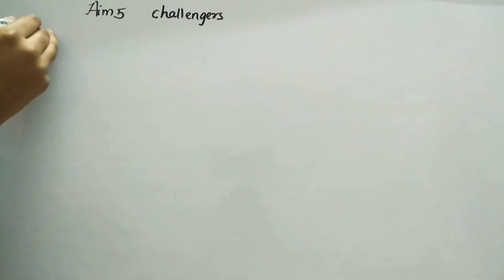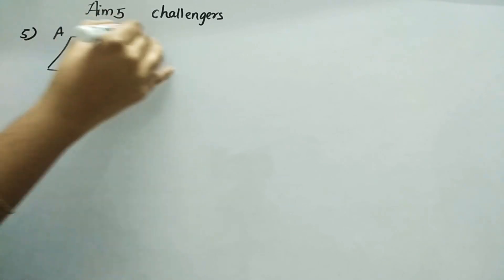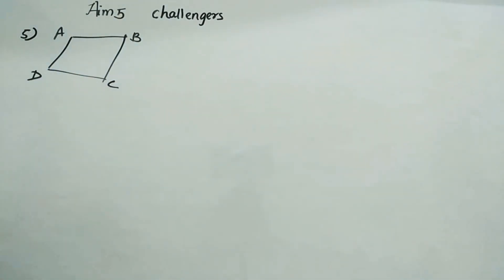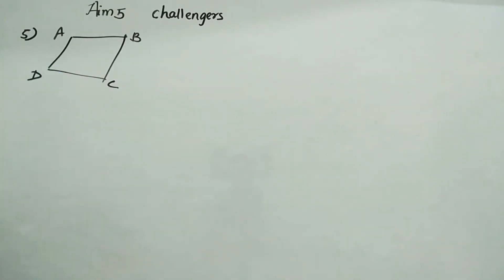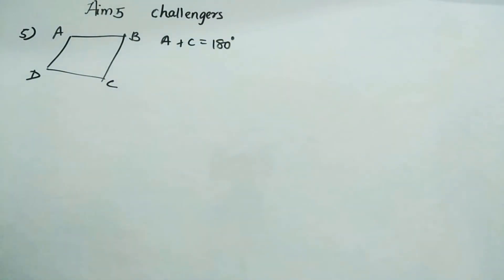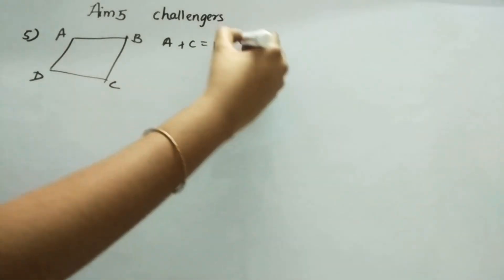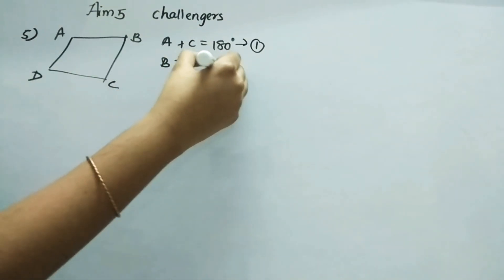Fifth question: ABCD is a cyclic quadrilateral. We have to prove two things: first, sin A + sin B = sin C + sin D; and second, cos A + cos B + cos C + cos D = 0. For a cyclic quadrilateral, A + C = 180° (equation 1) and B + D = 180° (equation 2).